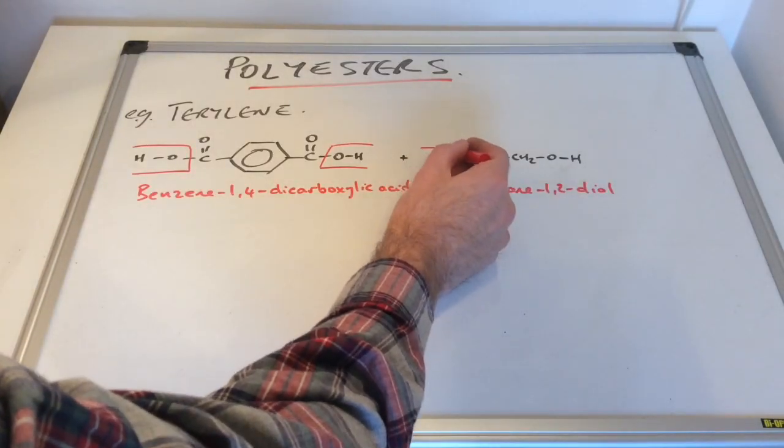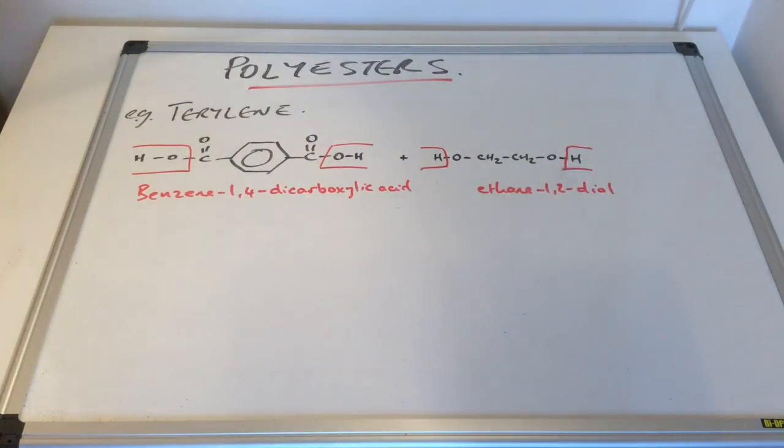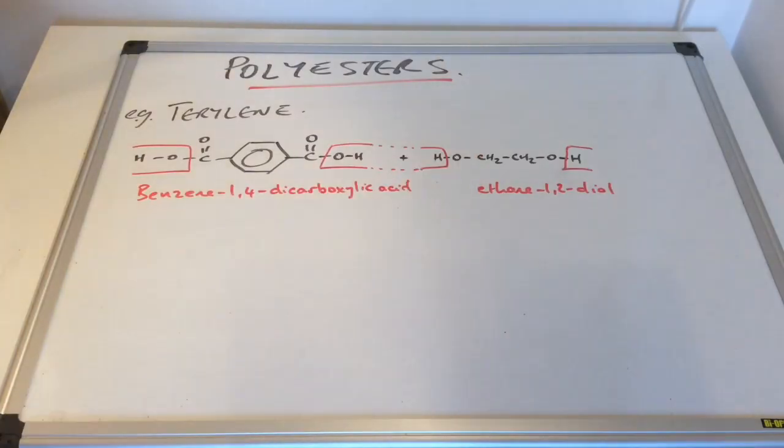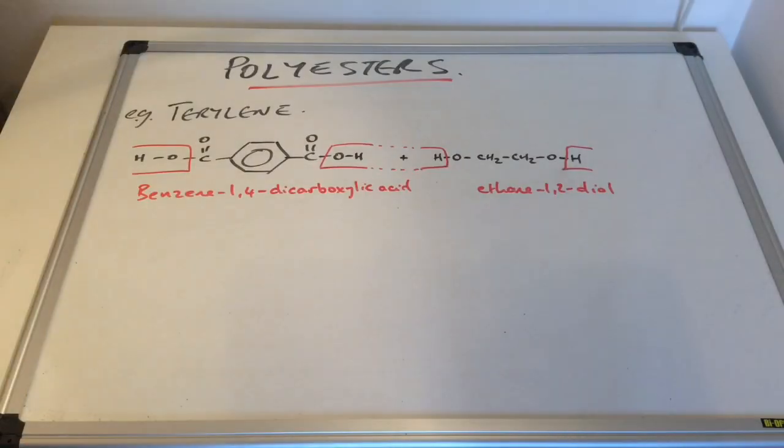And we're going to take out the hydrogen from the hydroxyl groups. And you can see if we just sort of dotted line that. There's your water molecule produced there. And of course we've got the water molecule at either end there being formed.